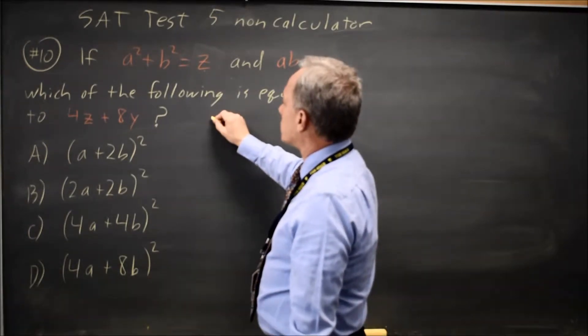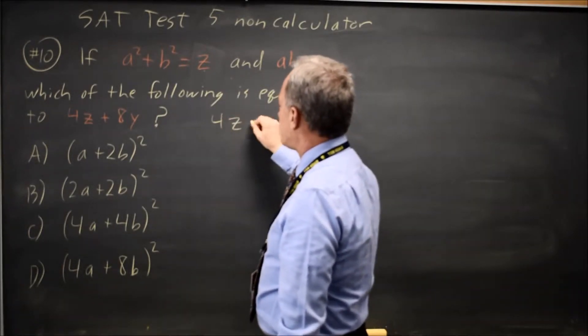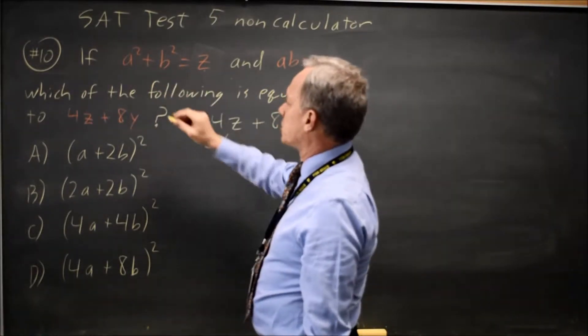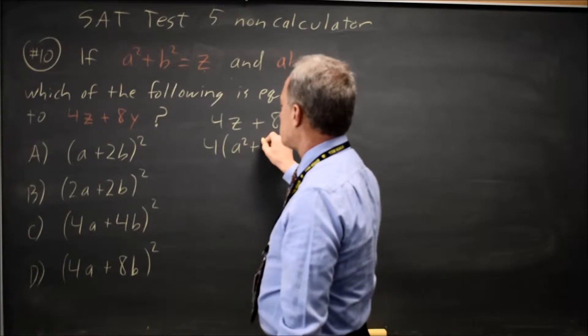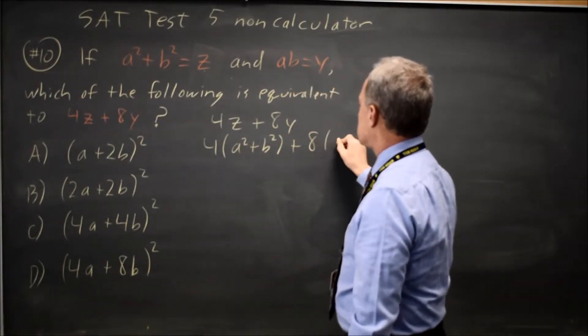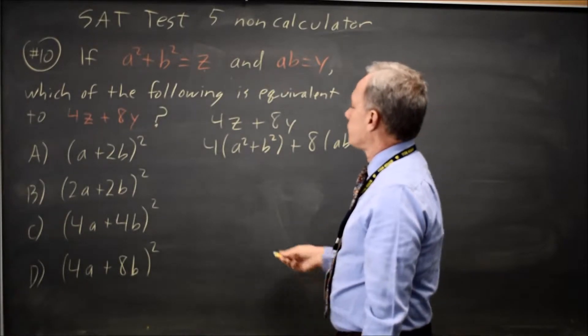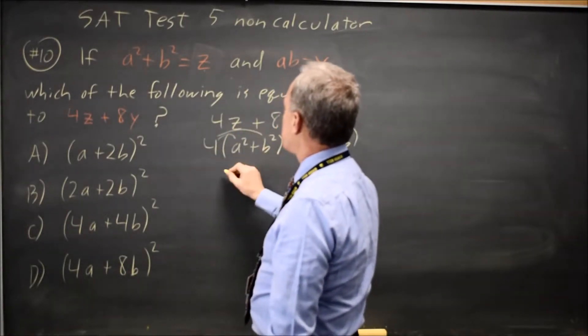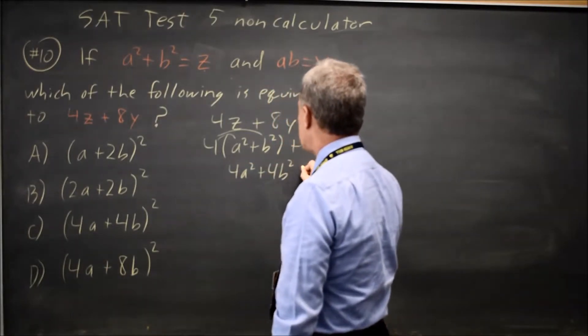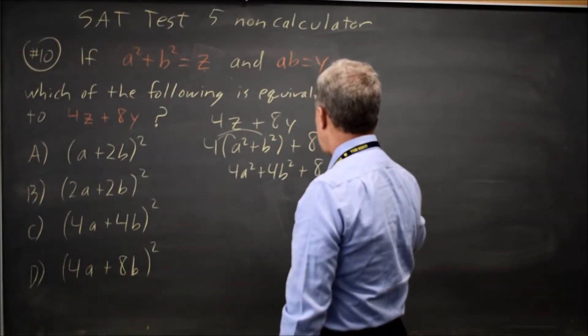To find this, I'm going to write 4z plus 8y, and then I'm going to substitute in these expressions. So that's 4 times a squared plus b squared plus 8 times y is ab. Distributing the 4 to both the a squared and the b squared, I get 4a squared plus 4b squared plus 8ab.